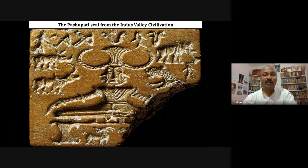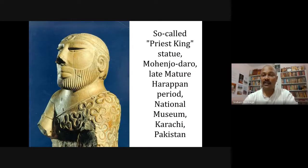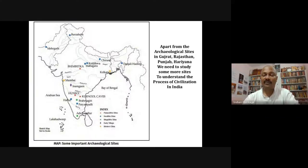The Pashupati Seal is mentioned in Jaina and Buddhist literature — sometimes referred to as Rishabhdeva. The so-called Priest King statue from Mohenjo-daro, from the late mature Harappan period, is kept in the National Museum Karachi, Pakistan. Scholars also tried to make different types of figures, including female figurines.